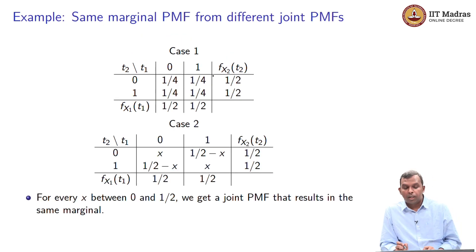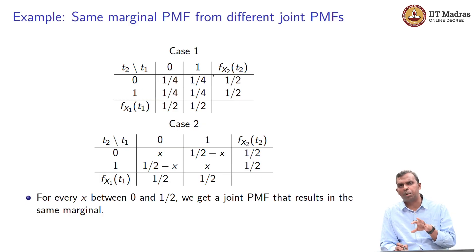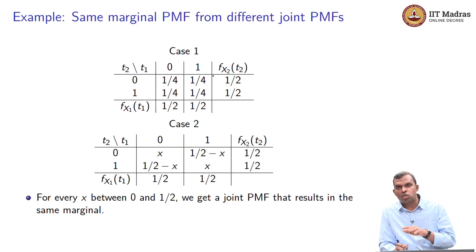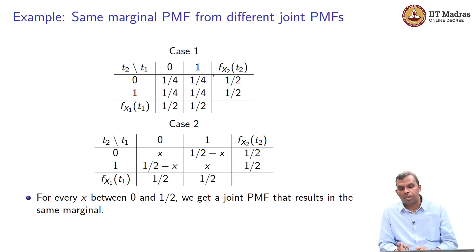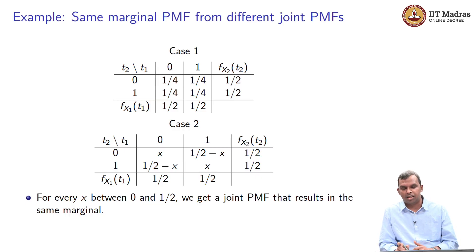An important point: the same marginal PMF can result from different joint PMFs. In fact, any number of joint PMFs can give you the same marginal PMFs. A common mistake is to assume that the joint PMF must be the product of the marginal PMFs. That is one valid joint PMF, but it is not the only one that gives those marginals.